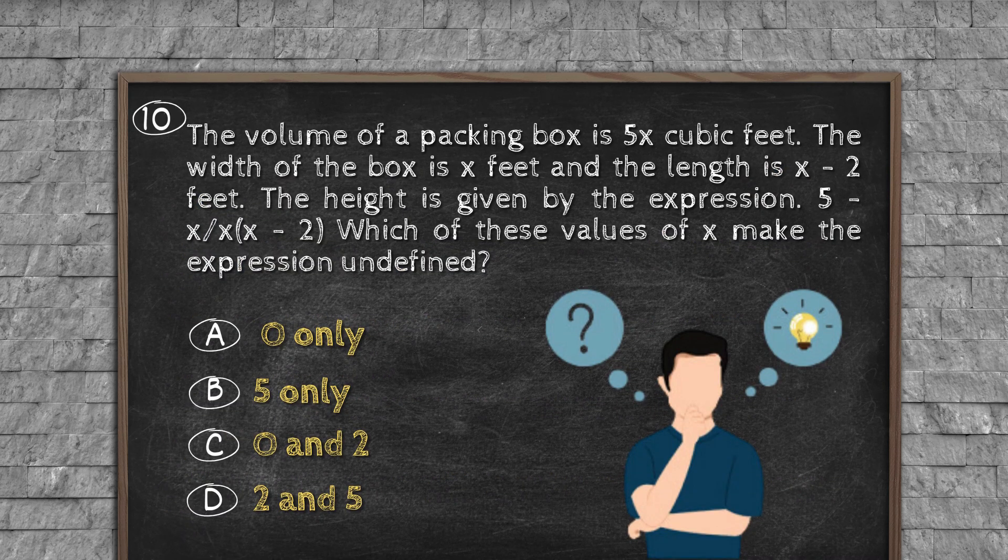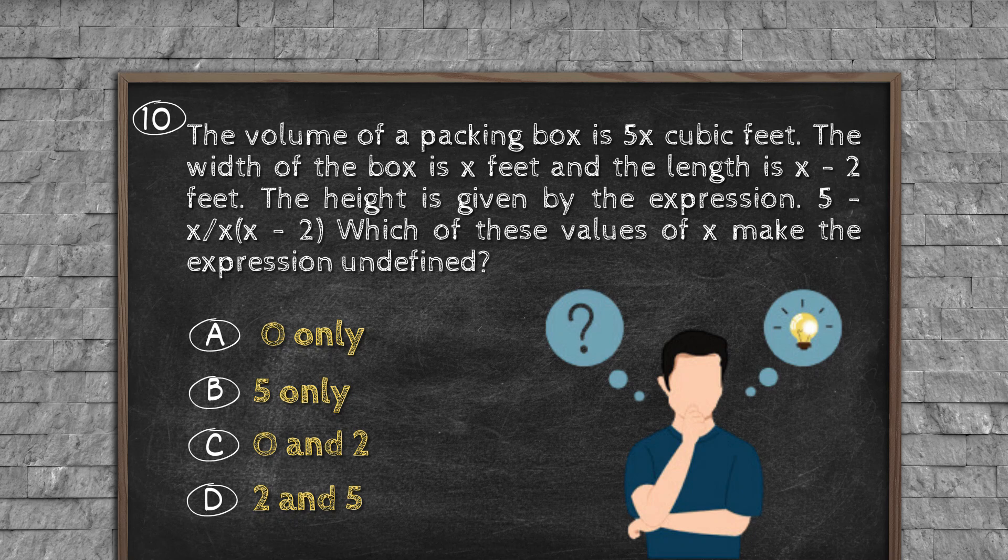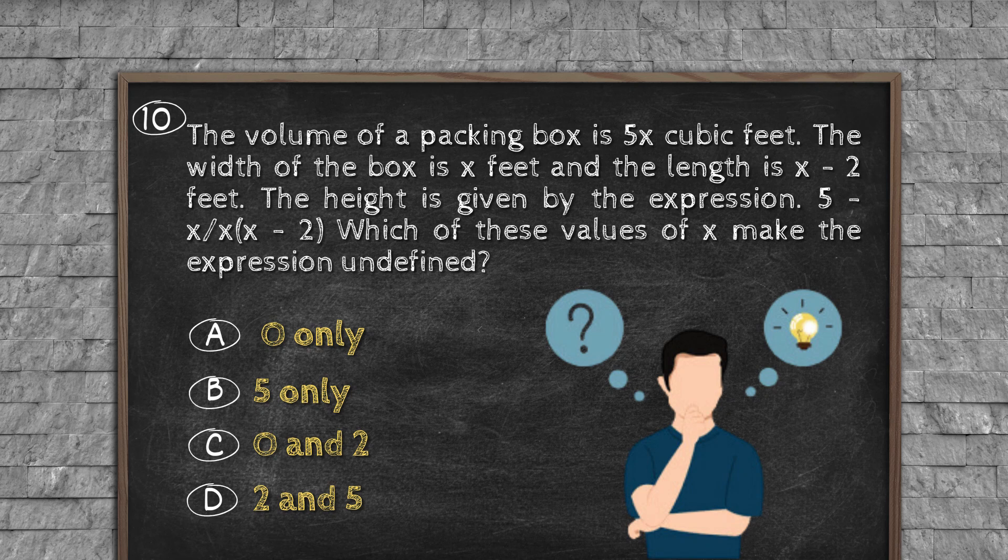Question number 10: The volume of a packing box is 5x cubic feet. The width of the box is x feet and the length is x - 2 feet. The height is given by the expression 5x/(x(x - 2)). Which of these values of x make the expression undefined? Option A: 0 only. Option B: 5 only. Option C: 0 and 2. Option D: 2 and 5.